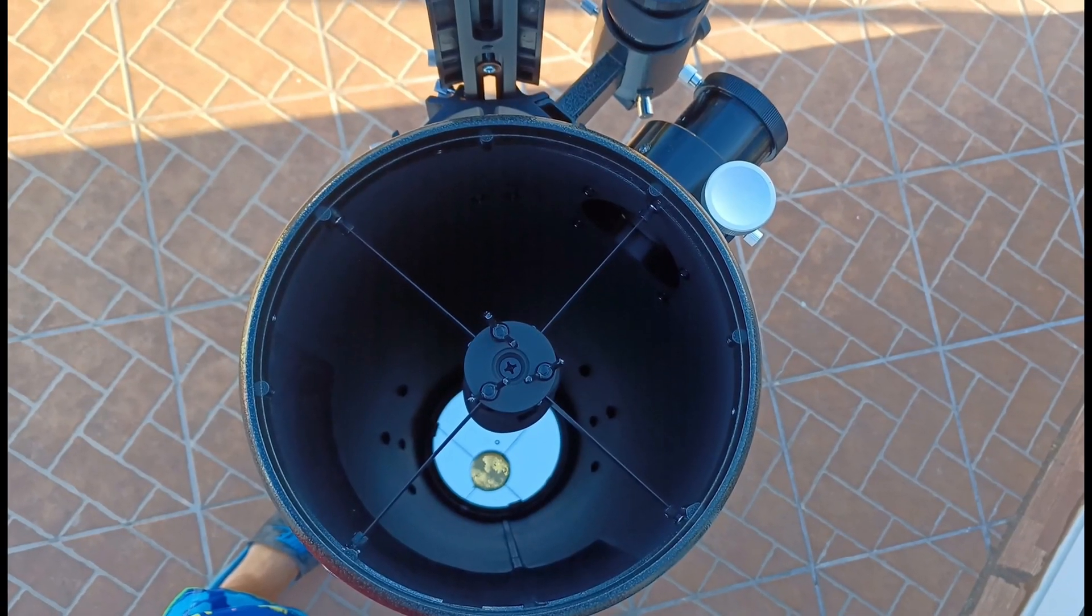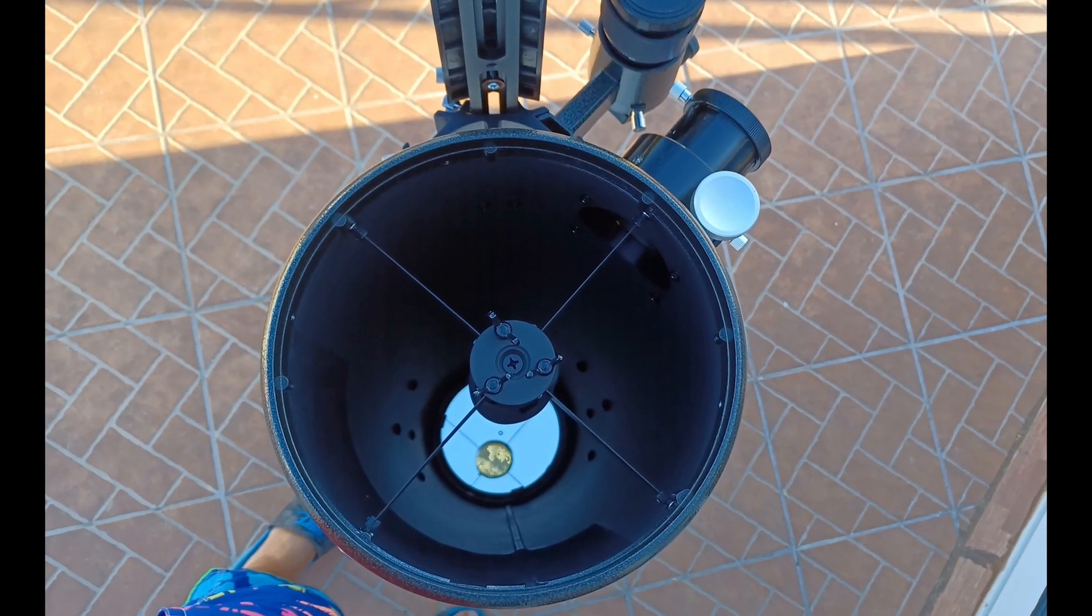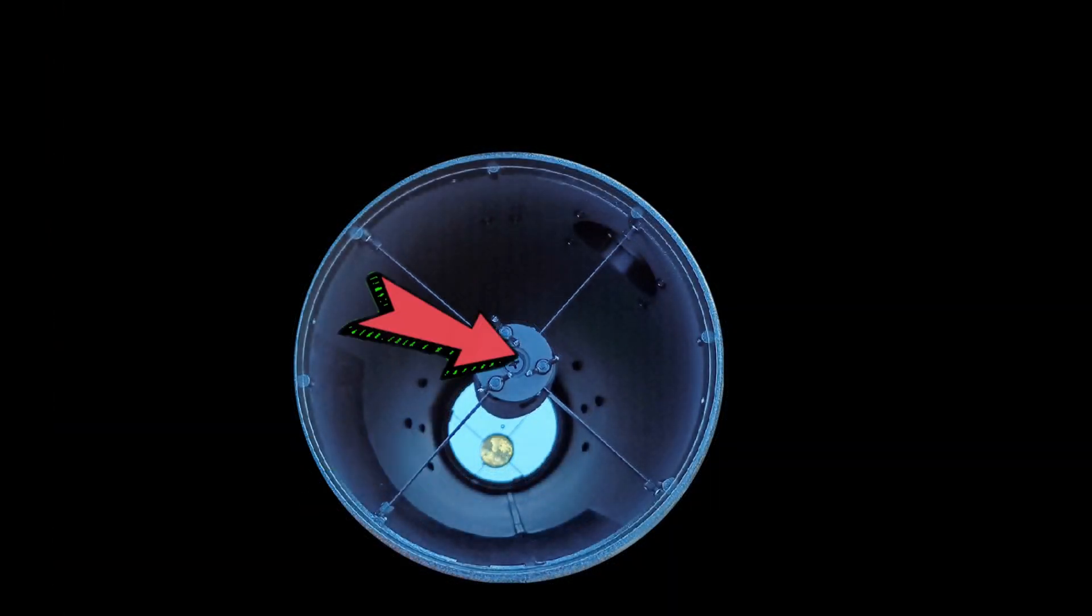The donut shape image you see is only the reflection of the primary mirror on the secondary mirror. If you look through the top of your telescope, you will see first the secondary mirror, the little one, and then at the bottom you will see the primary mirror, the large one.